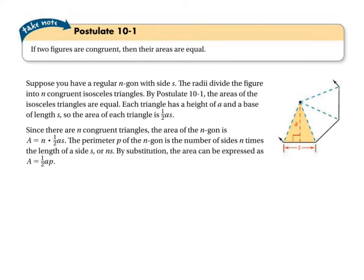Since you can find the area of one triangle, you can say they're all the same all the way around and just multiply by how many you've got. By Postulate 10-1, the areas of the isosceles triangles are equal. Each triangle has a height of a — the apothem — and a base length of s — the side length. The area of each triangle is one half times s times a. Since there are n of those triangles, the area of the entire n-gon is that area of one triangle times the number of triangles, which equals the number of sides.